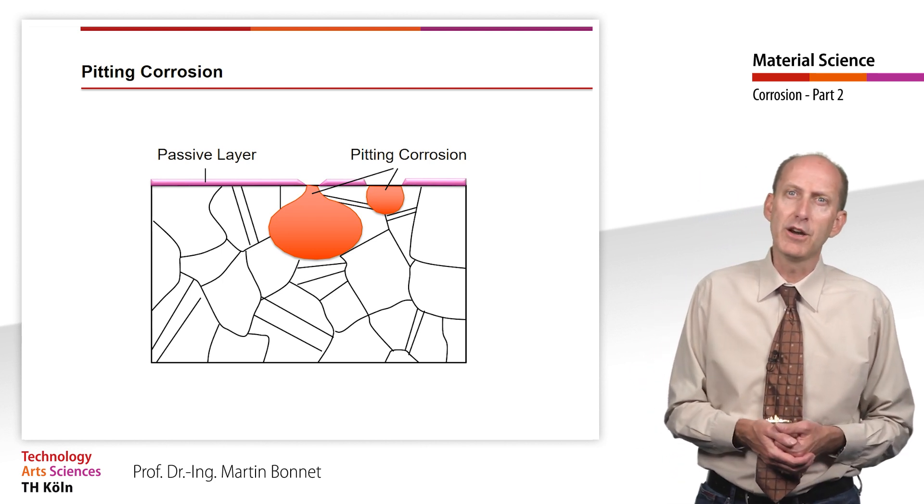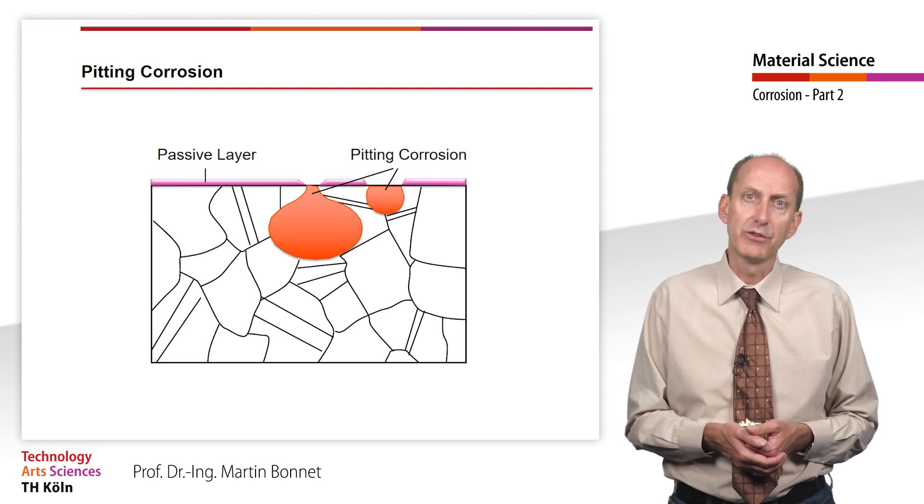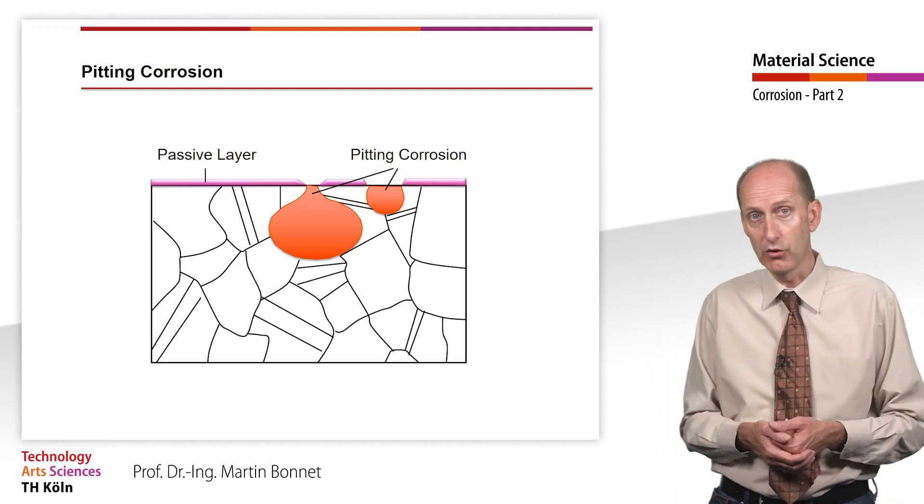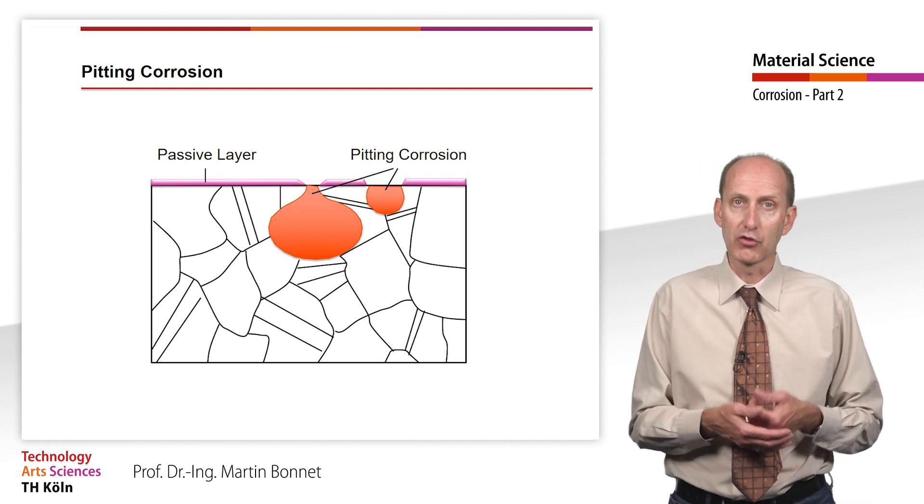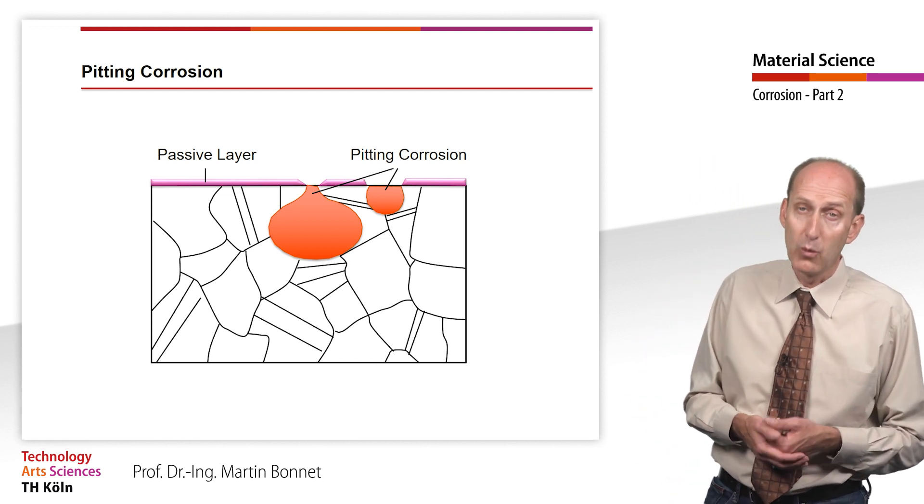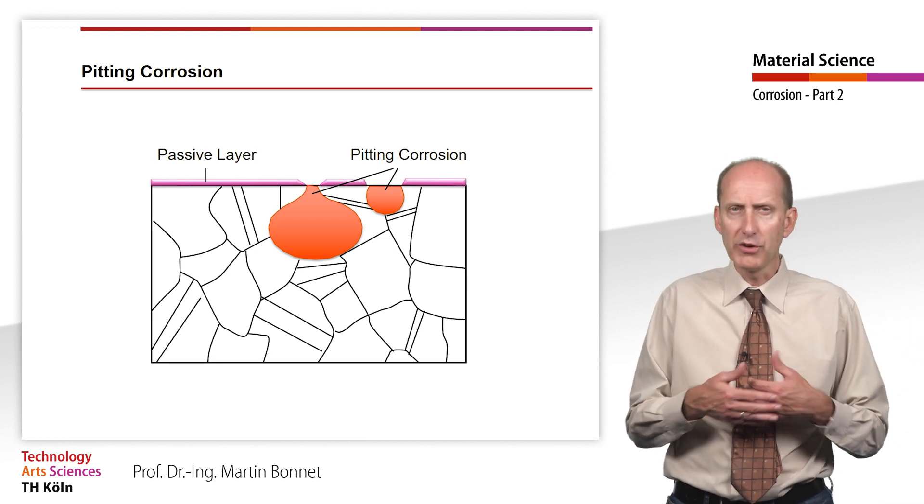In the case of many of these types of stainless steel, however, local damage to the passive layer can occur in media with a high chloride concentration, leading to progressive corrosion. Once started, this so-called pitting corrosion is almost unstoppable.